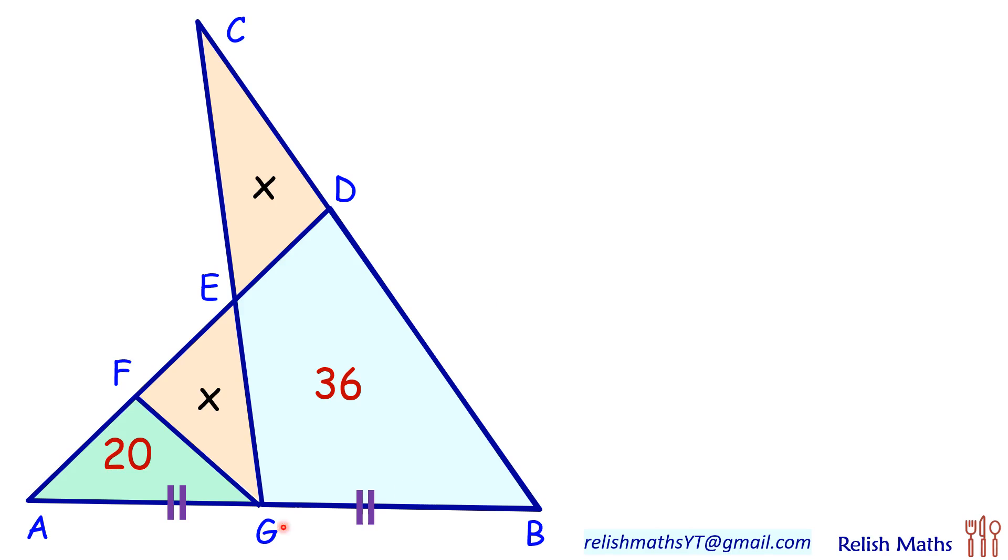In today's question we have two intersecting triangles, one is triangle DAB and another is triangle CGB. Given is this particular area is 36 cm², this area is 20 cm². These two triangles have equal areas and we have to find value of X.